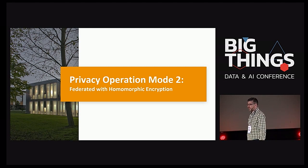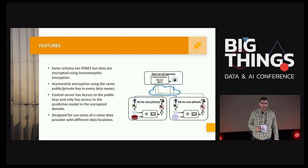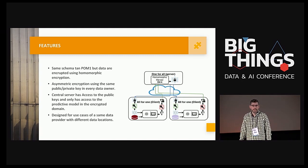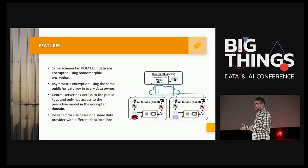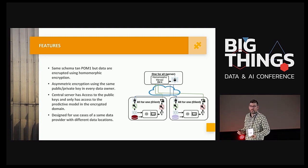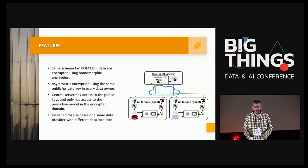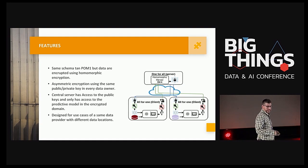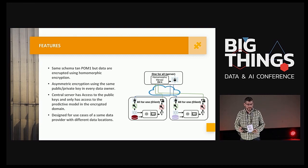We have another privacy operation mode: federated with homomorphic encryption. It's similar to the previous one, but imagine I have a company with three different buildings and the orchestrator is a cloud provider. Maybe I don't want a copy of my predictive model in the cloud — I want to keep it so that only the data owners have a copy. So we are going to use homomorphic encryption.